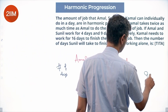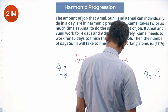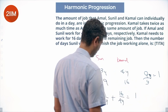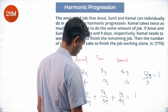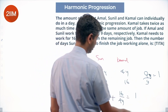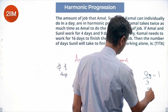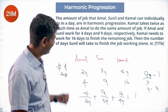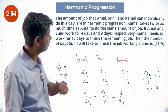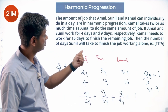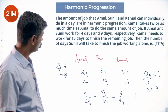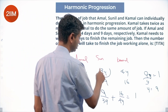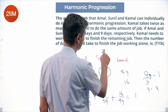So 9/y equals 1, meaning y equals 9. Therefore, Amal takes 2y = 18 days, Sunil takes 3y = 27 days, and Kamal takes 4y = 36 days to complete the job individually. The answer to how many days Sunil takes working alone is 3y = 27 days.